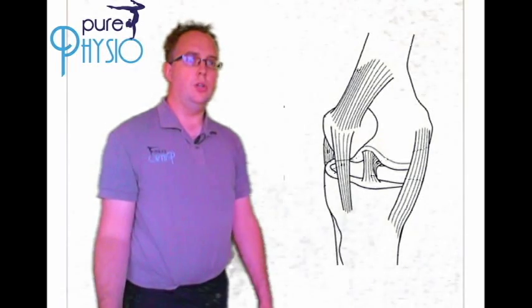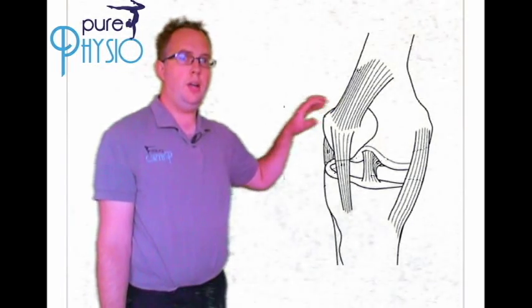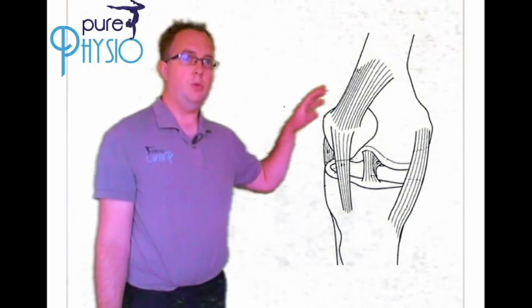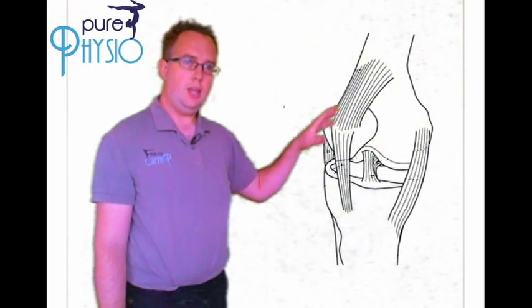Now this is a joint which is formed from the femur, the thigh bone, the kneecap or patella, and it's really just a posh pulley system which makes a hinge joint move.